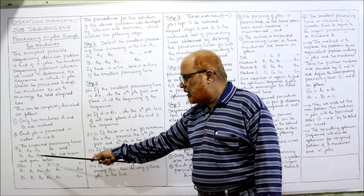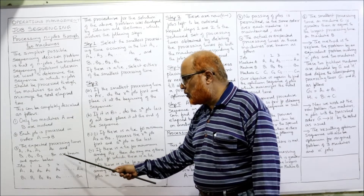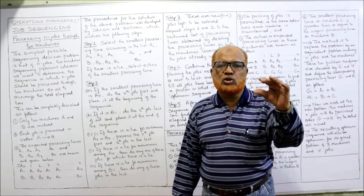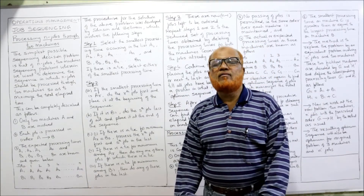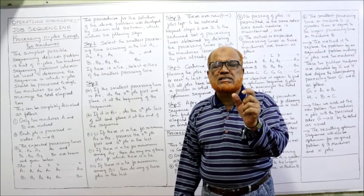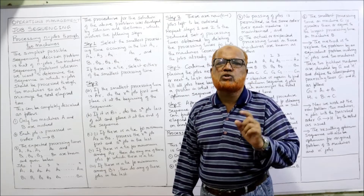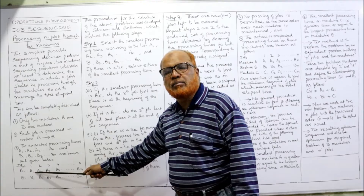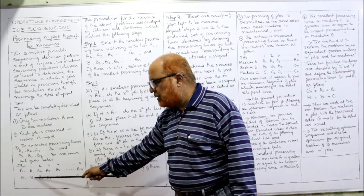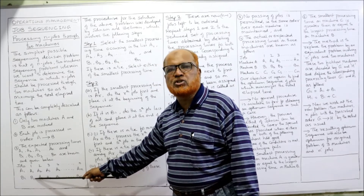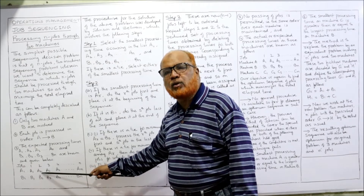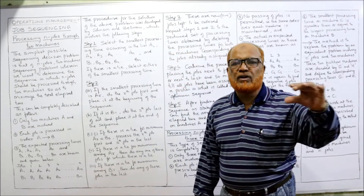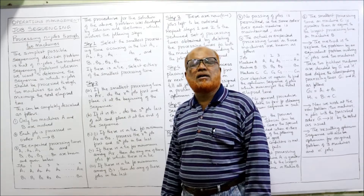The expected processing times a1, a2, a3 up to an, and b1, b2, b3 up to bn are known and given. For example, job number one requires time a1 on machine A and b1 on machine B. Similarly, job two requires a2 on machine A and b2 on machine B. We are given the estimated time of each job on each machine.